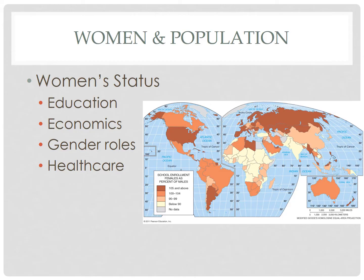Educational achievement also has a positive correlation with age of marriage. Typically, as the level of education goes up, women will marry later in life. For example, from 1950 to 2010, the median age of marriage in the United States went from 20 years to 27 years. Education can also refer to knowledge of health care — with increasing knowledge, women learn about family planning, and it can also increase access to regular health care for both mothers and babies.